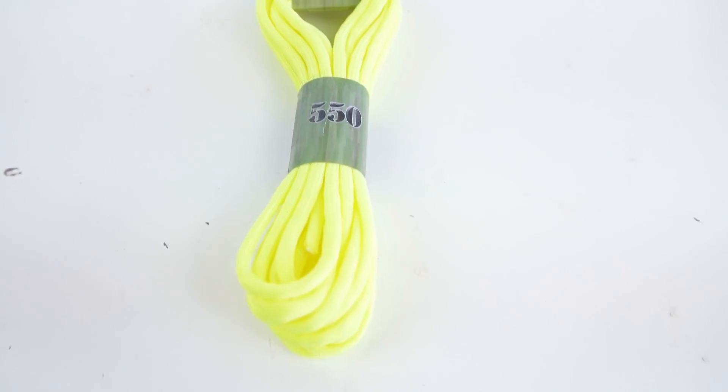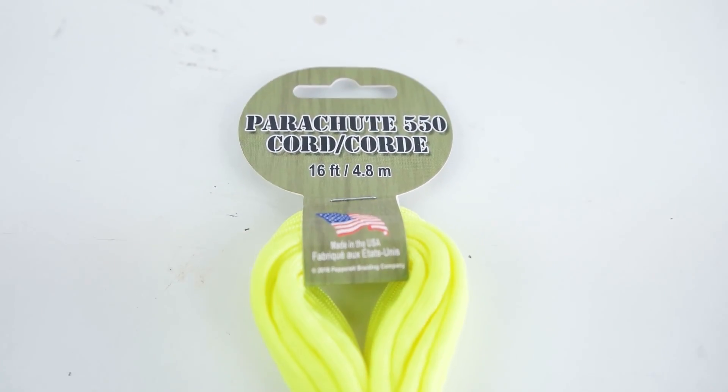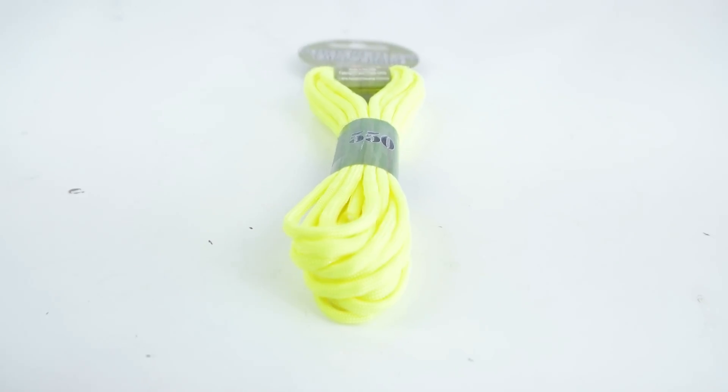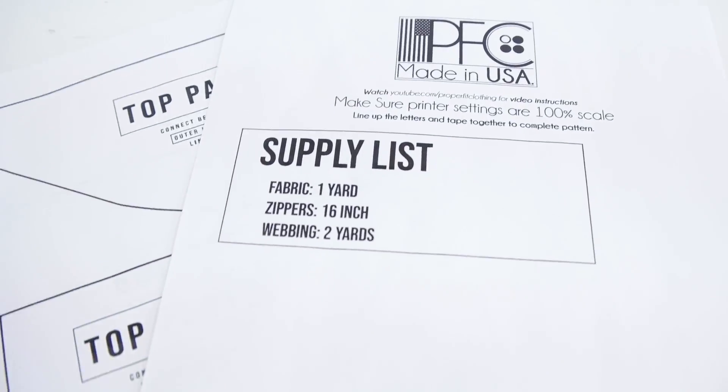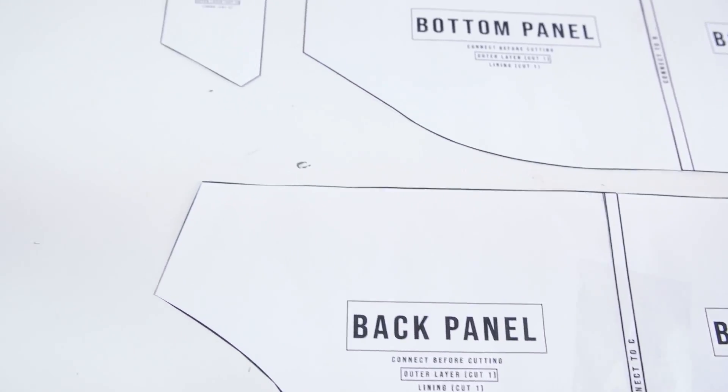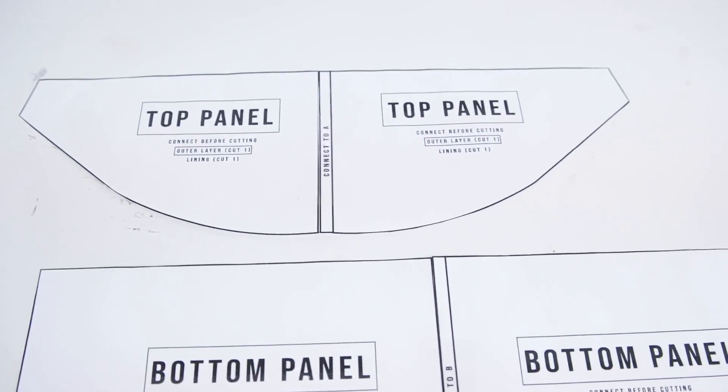You'll also need parachute cord, and like always, the links to these products will be in the description below. Lastly, you need your pattern, and this pattern is available at profitfitclothing.com. Super easy to use—just download it, print it, and you're ready to go.